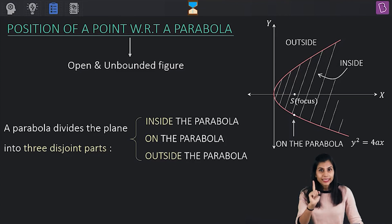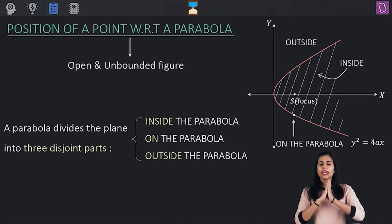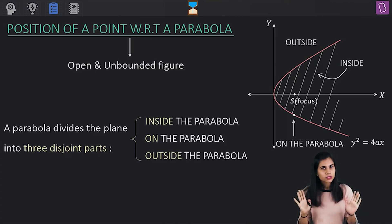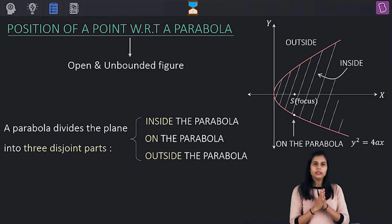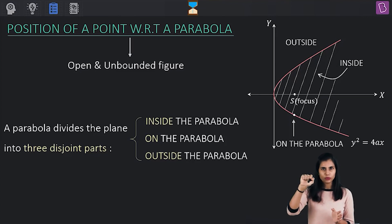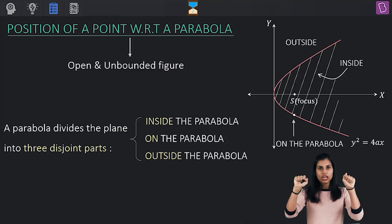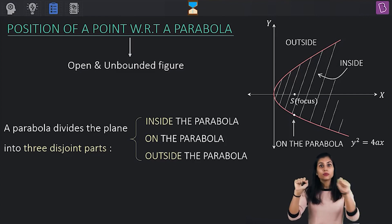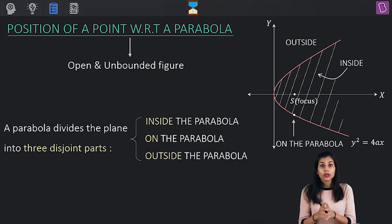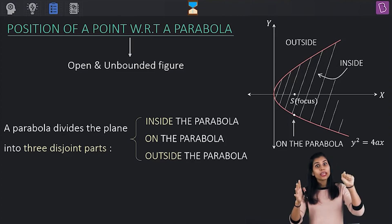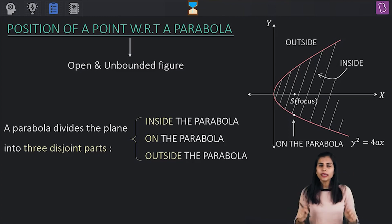This explanation is not just confined to this particular parabola — it is valid for every parabola, be it standard or non-standard. Now, if I give you the equation of the parabola and the coordinates of a point, what is the criteria to say that this point lies inside the parabola, outside the parabola, or on the parabola? Let's understand what those conditions are.